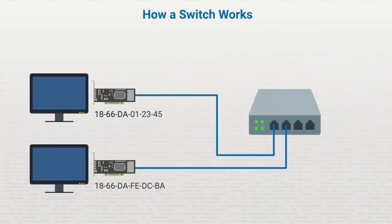Just like every house has its own unique address, every device that connects to a network, whether wired or wireless, has a unique identifier called a media access control address, or MAC address. The MAC address is a 48-bit number separated into six 2-byte numbers. The first 24 bits represent the device manufacturer. For example, 18-66-DA represents Dell Inc. The last 24 bits are a random sequential number assigned by the manufacturer to ensure that each device has a unique MAC address.